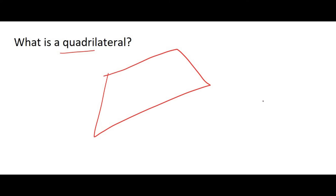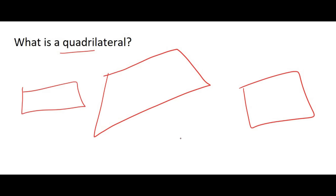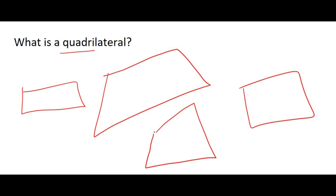It does not have to look neat — it can be anything. It can be a square, a rectangle, or even a strange-looking shape. It could be any four-sided shape. So a quadrilateral is a four-sided shape and we get many different types.